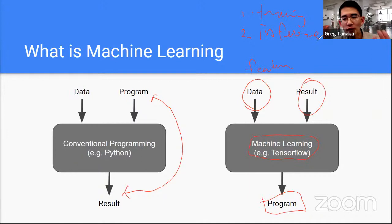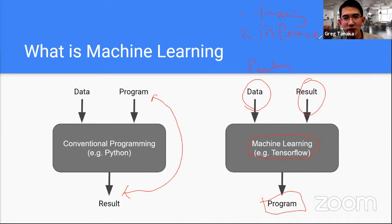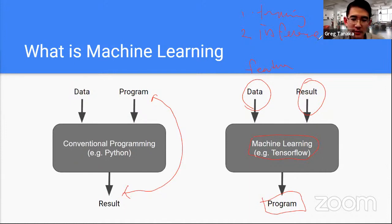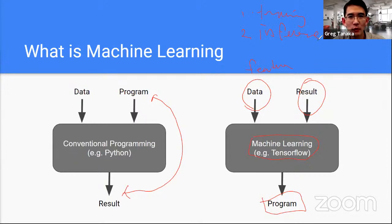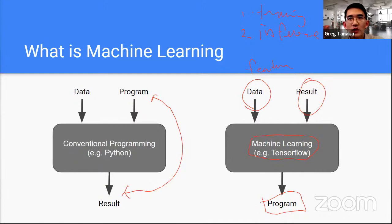Probably the most valuable person in the world going forward is going to be someone who knows how to teach machines. Right now programmers are really hot stuff, but increasingly it's going to be people that know how to teach machines — machine learning engineers. There are so many applications that are not possible without a machine learning approach, and so machine learning engineers could be the job of the future.